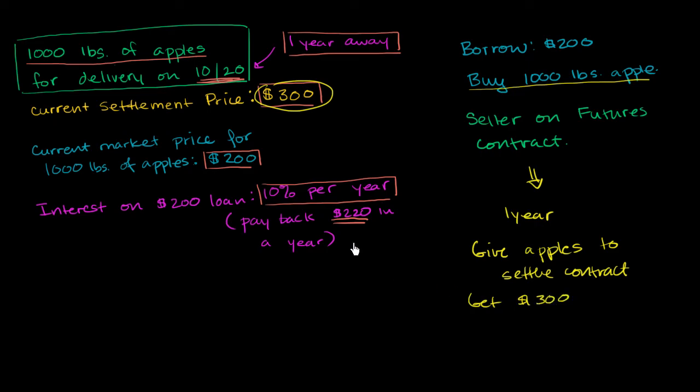And what do I owe? Well, I owe $220 on my loan. So let me subtract that out. So I owe $220. And so I made a guaranteed, risk-free $80 of profit in one year. And we're not thinking about how much money I might have had to set aside for margin. But this is essentially just free money.